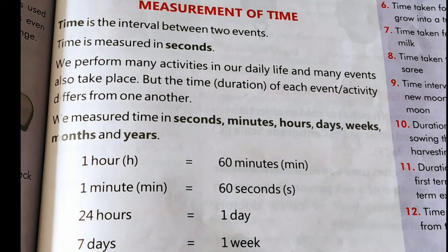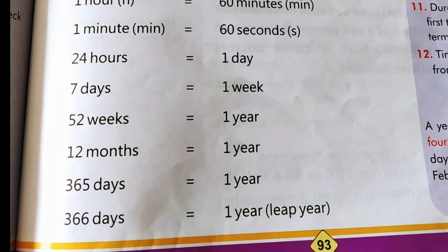We measure time in seconds, minutes, hours, days, weeks, months, and years. Hum time ko second mein, minute mein, ghante mein, days mein, hafton mein, mahinon mein, aur saal mein measure kartay hai. One hour is equal to 60 minutes. One minute is equal to 60 seconds. 24 hours is equal to 1 day. Seven days is equal to 1 week. 52 weeks is equal to 1 year. 12 months equal to 1 year. 365 days is equal to 1 year, and 366 days make 1 leap year.